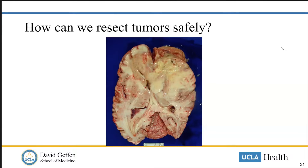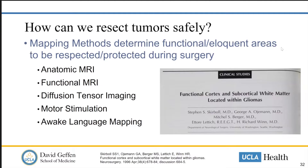How can we resect tumors safely? Using mapping methods to determine functional and eloquent areas that need to be protected during surgery can be done with a variety of techniques, like anatomic MRI, functional MRI, DTIs, motor stimulation, and awake language mapping. All of this is required because functional cortex and subcortical white matter can be located within gliomas, even high-grade glioblastomas.